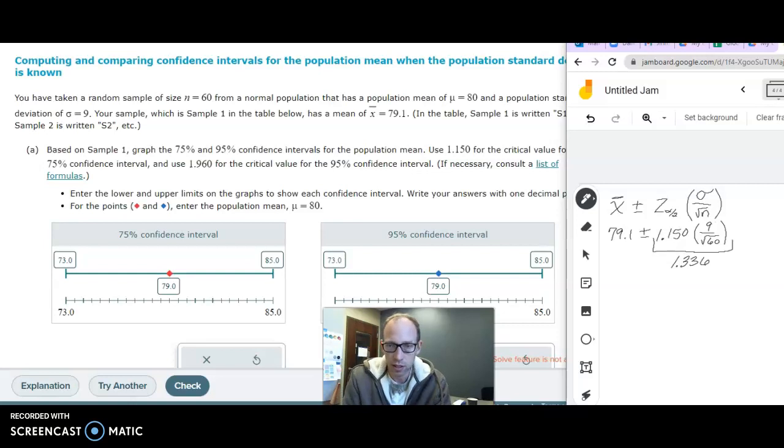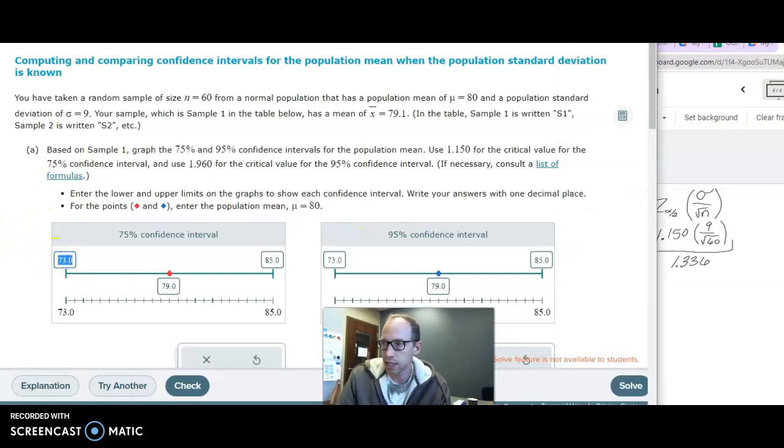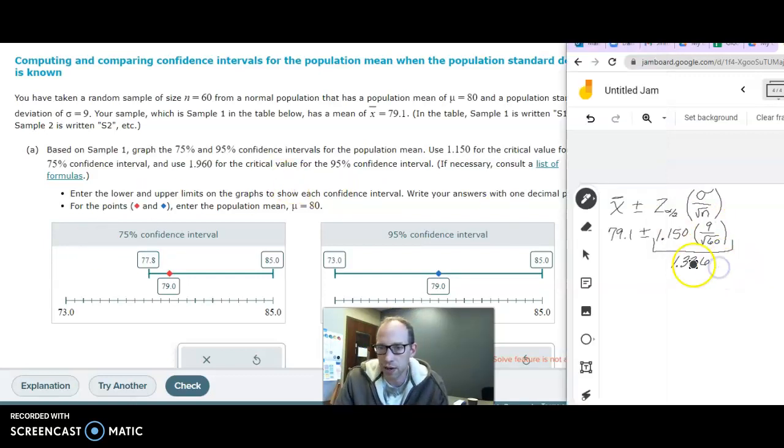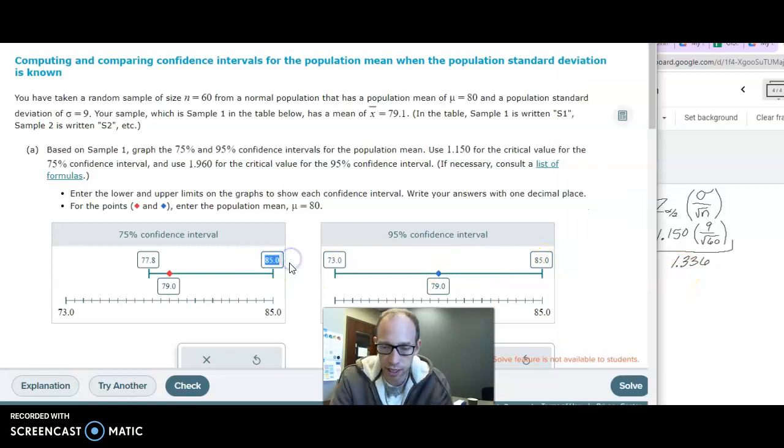So that's what we're going to do. So on the lower end, we should be getting 77.8. And then on the higher end, we might be able to figure this out, we're going to have 80.436, so that would give us 80.4. And what number goes here? It says enter the population mean. That's the thing we're trying to estimate.